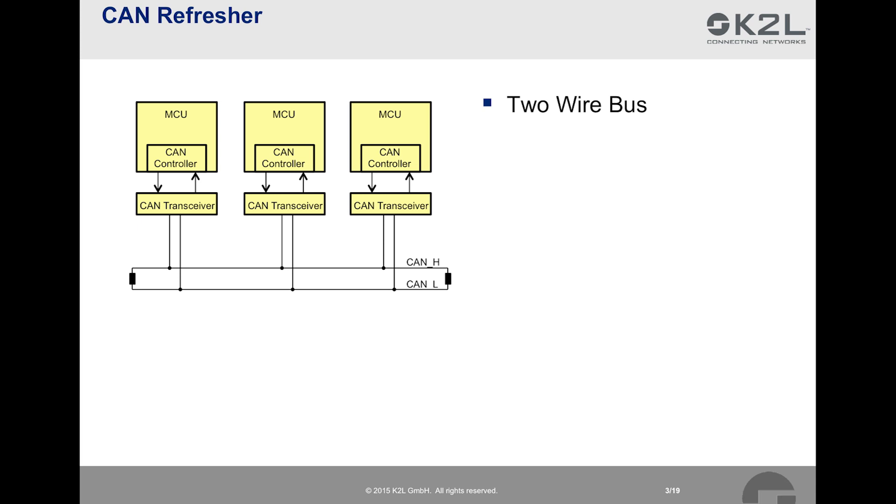CAN stands for Controller Area Network. CAN was developed by Bosch in the 1980s. It became an ISO standard in 1993. Since then it has evolved into one of the most important bus systems for automotive vehicles. It is highly probable that it will remain important for the foreseeable future.